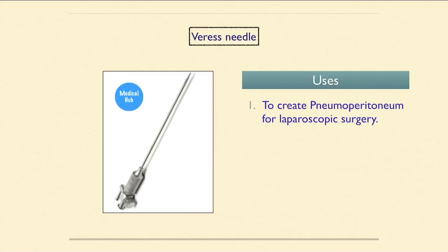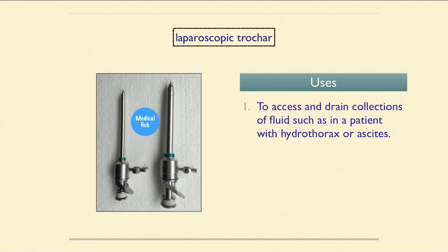The Veress needle is used to create a pneumoperitoneum for laparoscopic surgery. The laparoscopic trocar is used to access and drain collections of fluid, such as in a patient with hydrothorax or ascites.